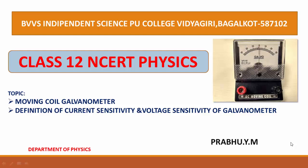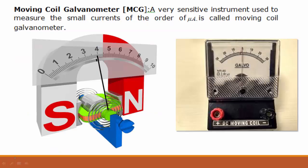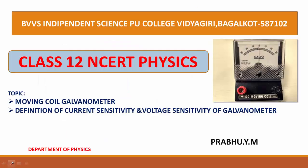A galvanometer is a device which is used to measure a small amount of electric current. It measures current in the order of microampere, that is 10 to the power of minus 6 ampere.